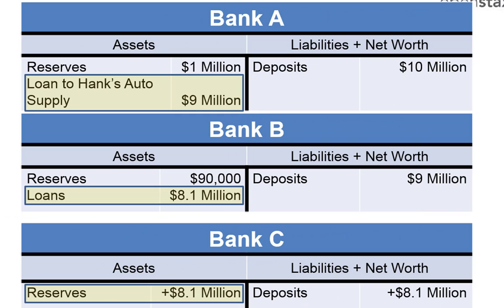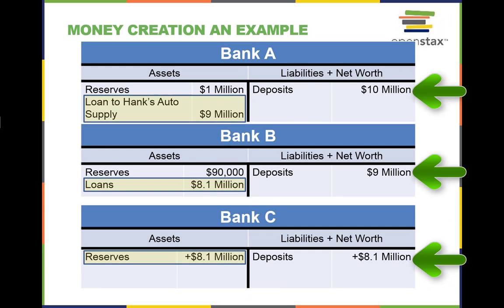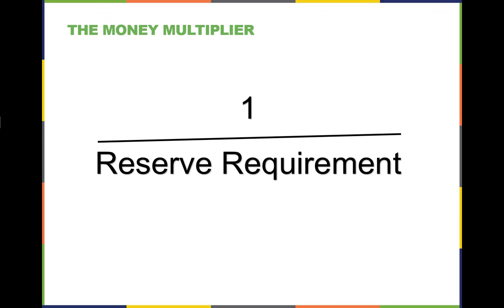As shown here, the initial deposits of ten million dollars are multiplied through lending: ten million, plus another eight point one million from Bank B, and then perhaps another loan from Bank C as well. This creates money. This setup is called fractional reserve banking. The reason banks don't lend out all of their money is because of a requirement from the Federal Reserve — a regulation that requires them to keep a certain percent of total deposits on hand or in reserve. This helps provide stability to the banking system.